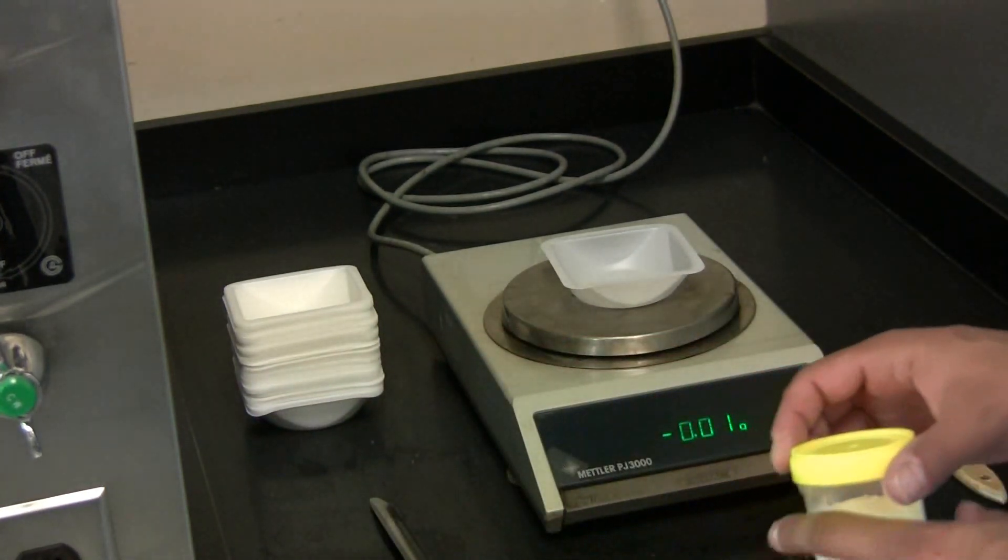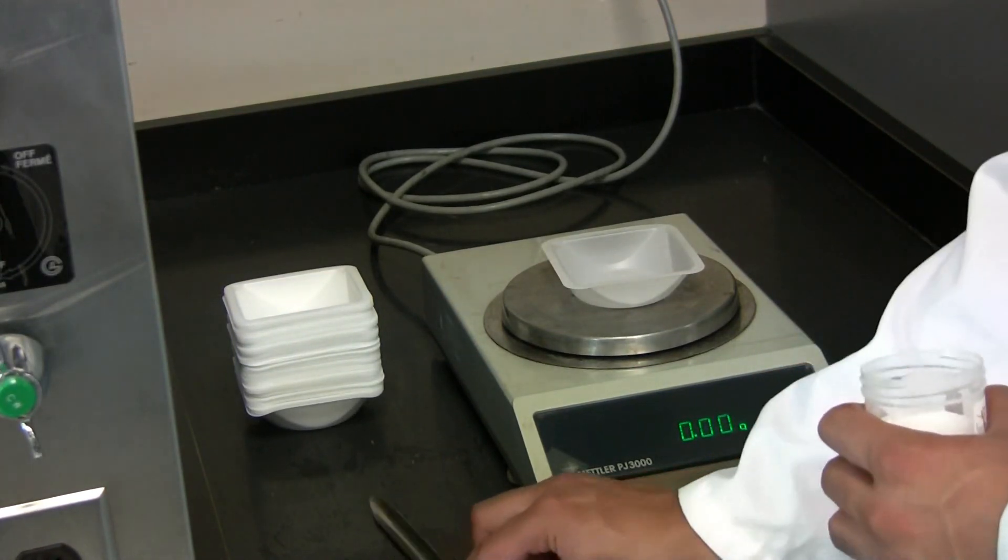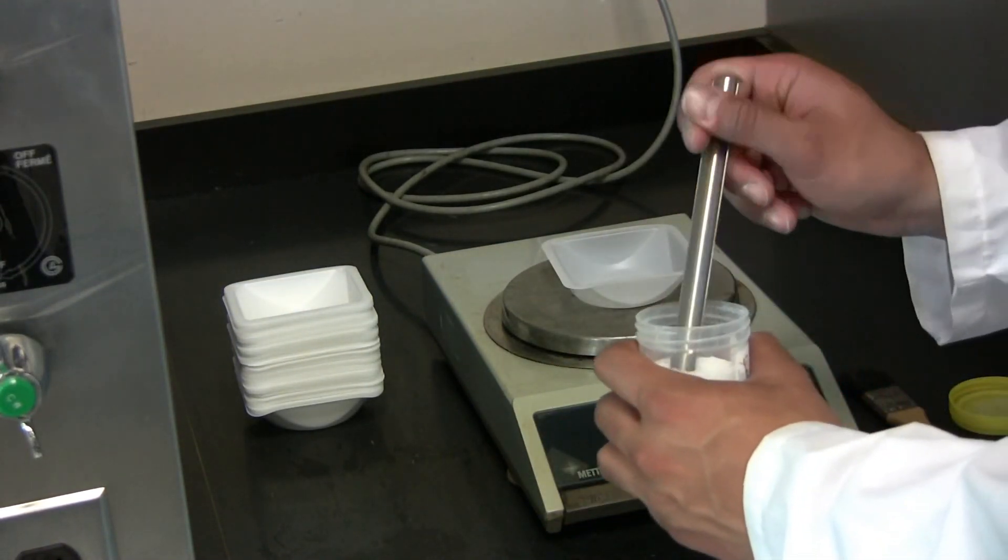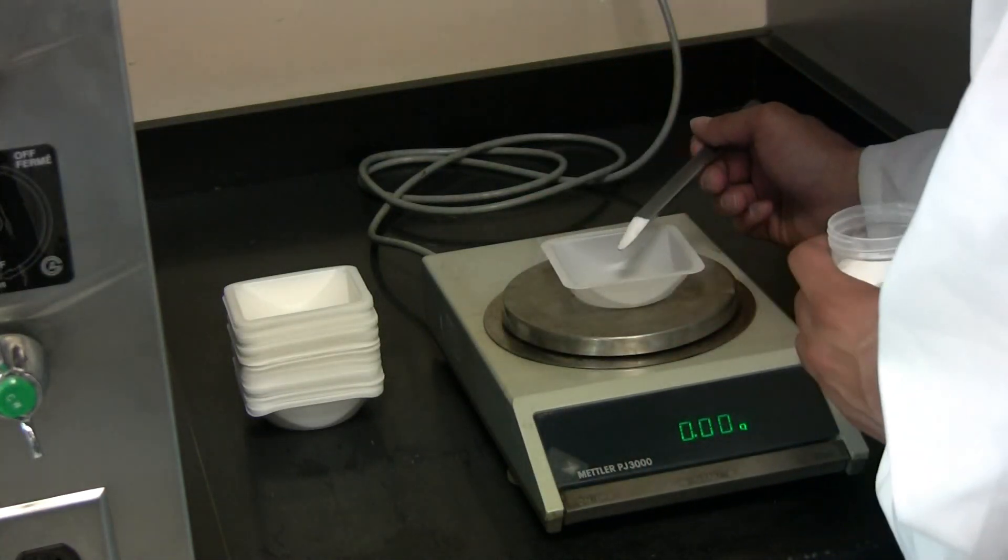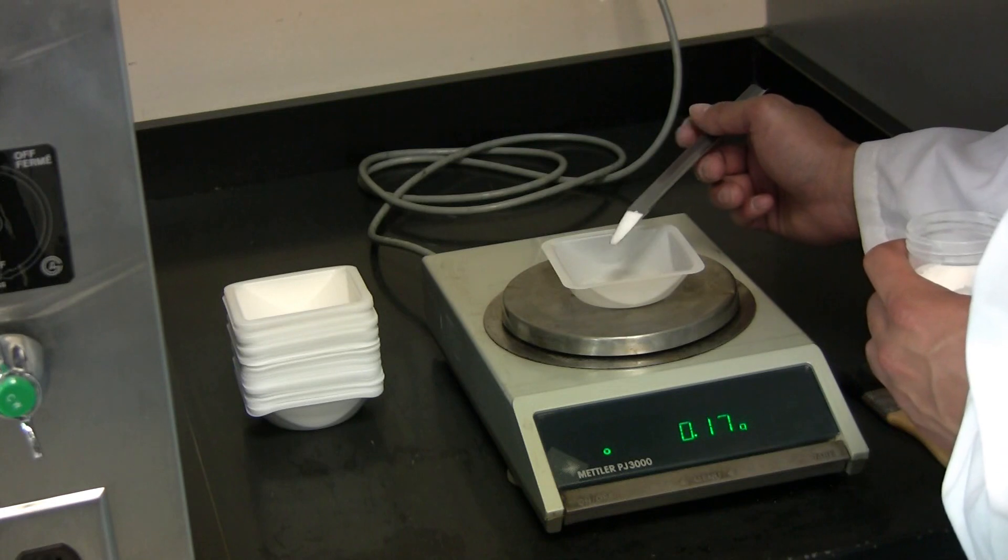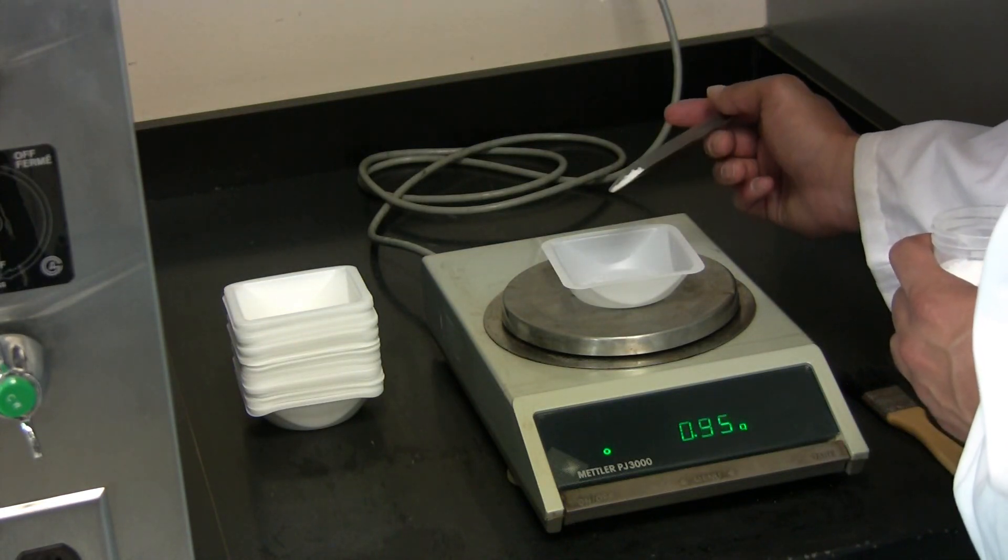Next, take your desired substance and your scrupula and scoop in the specific amount that you need. Make sure not to spill any of it onto the top loading balance, and that all of it remains in the weigh boat.